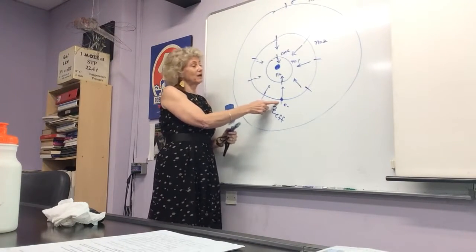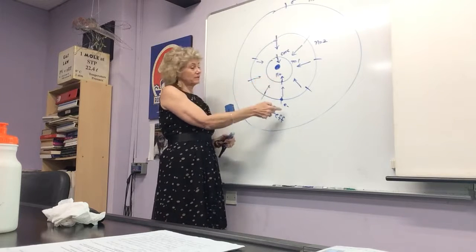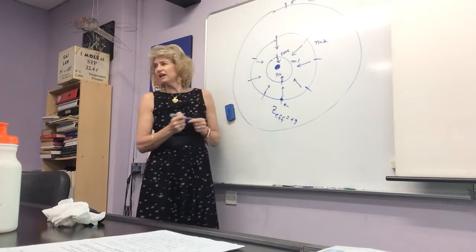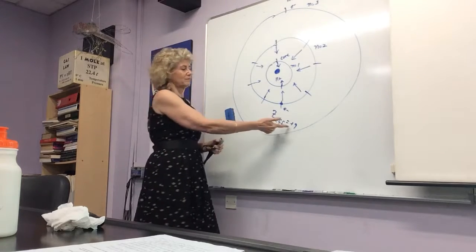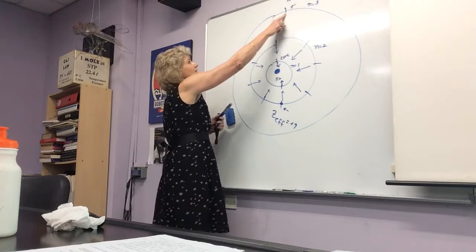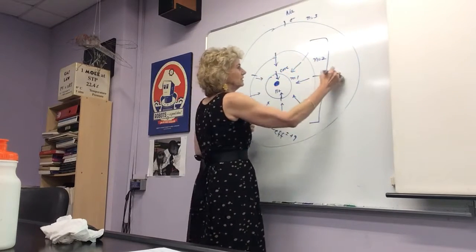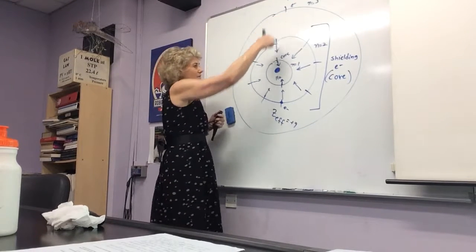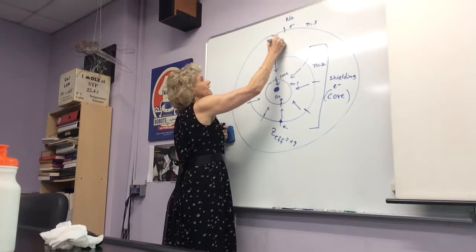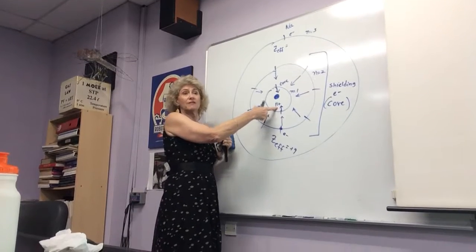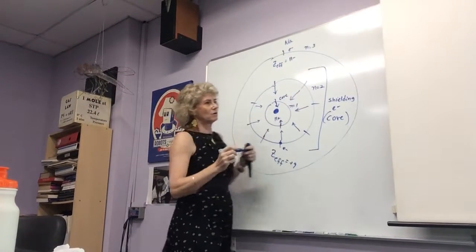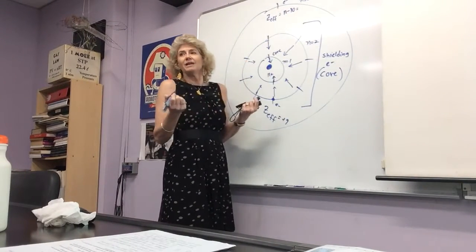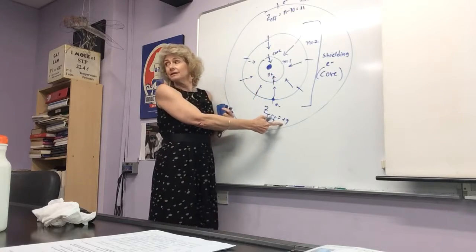So this valence electron is only feeling: 11 (the number of protons) minus the 10 core electrons — an effective nuclear charge of only one. Positive one. That's not a very strong attractive force. This electron in the inner n=1 shell was experiencing nine — 11 minus 2. This outer electron is only experiencing one. So the Z effective for sodium's valence electron is just positive one.